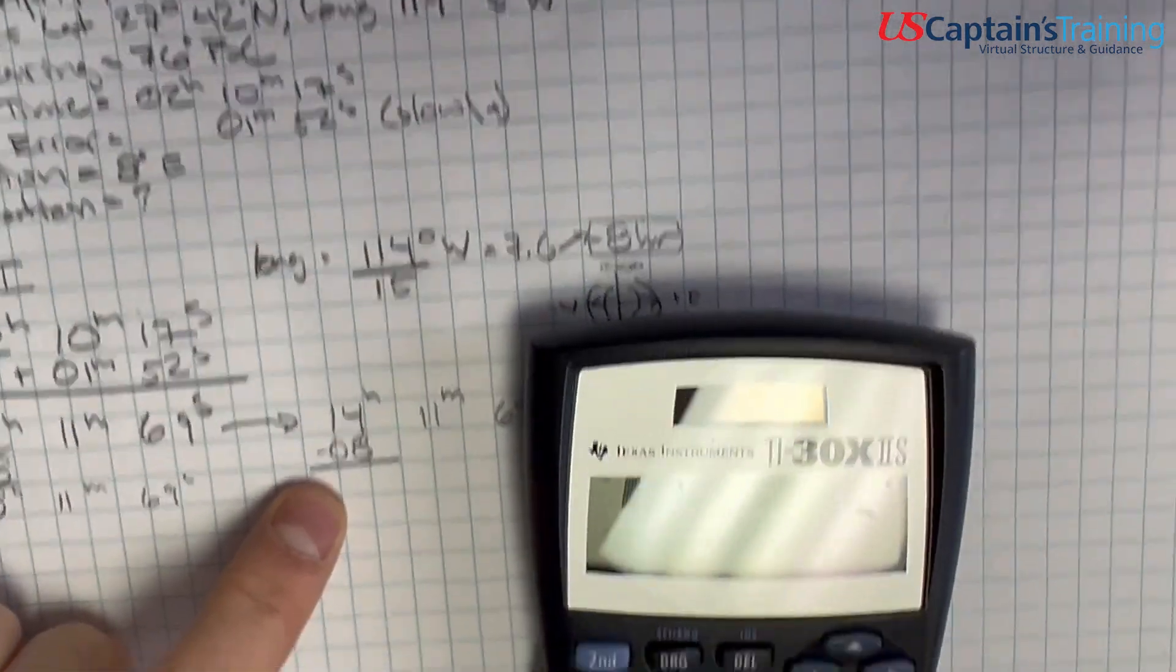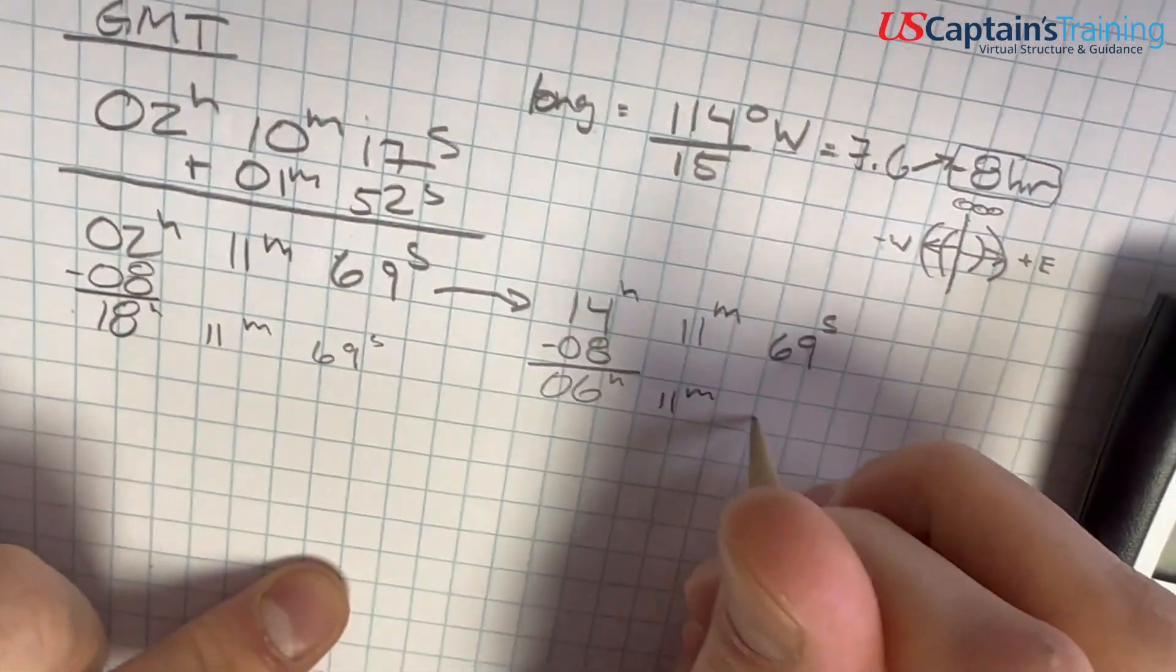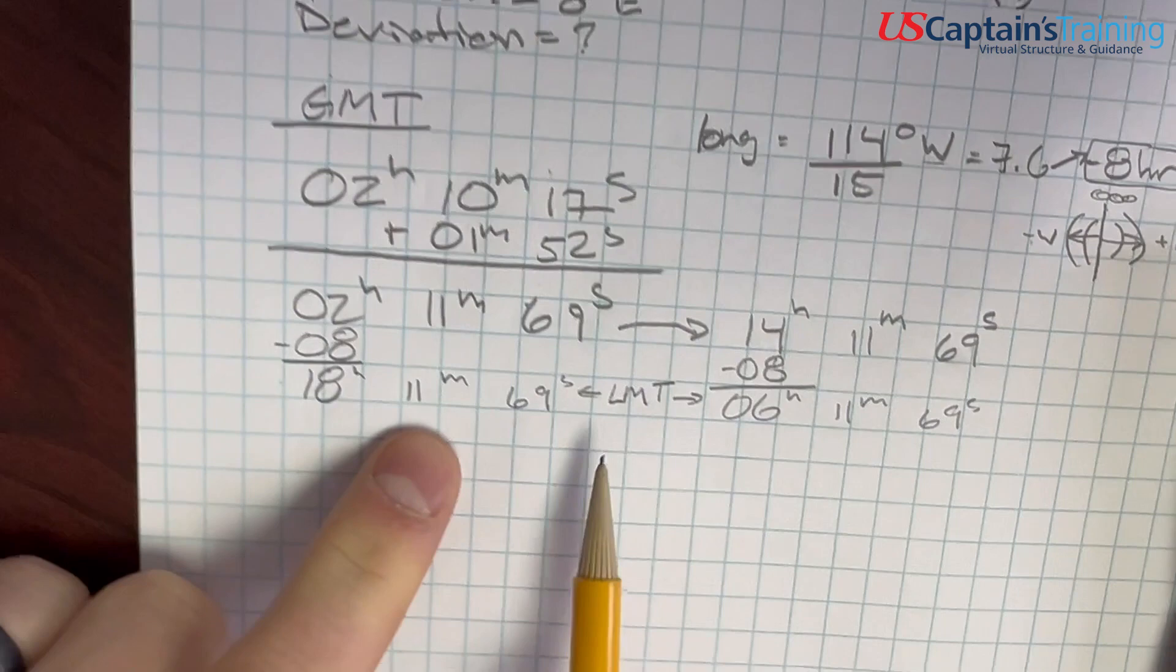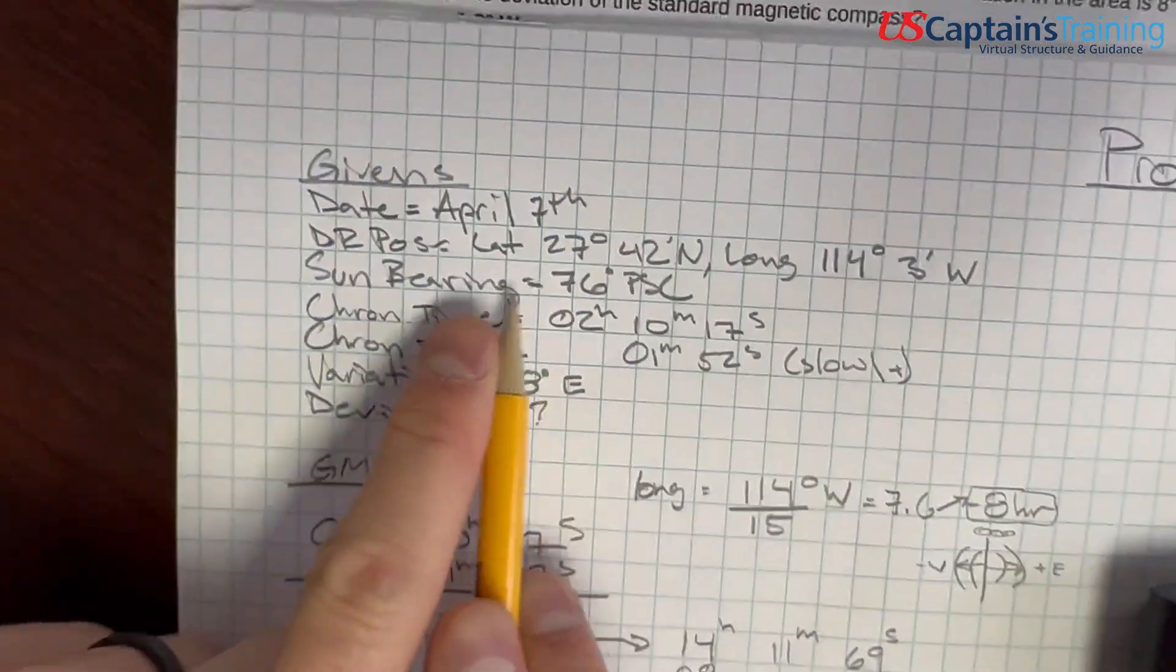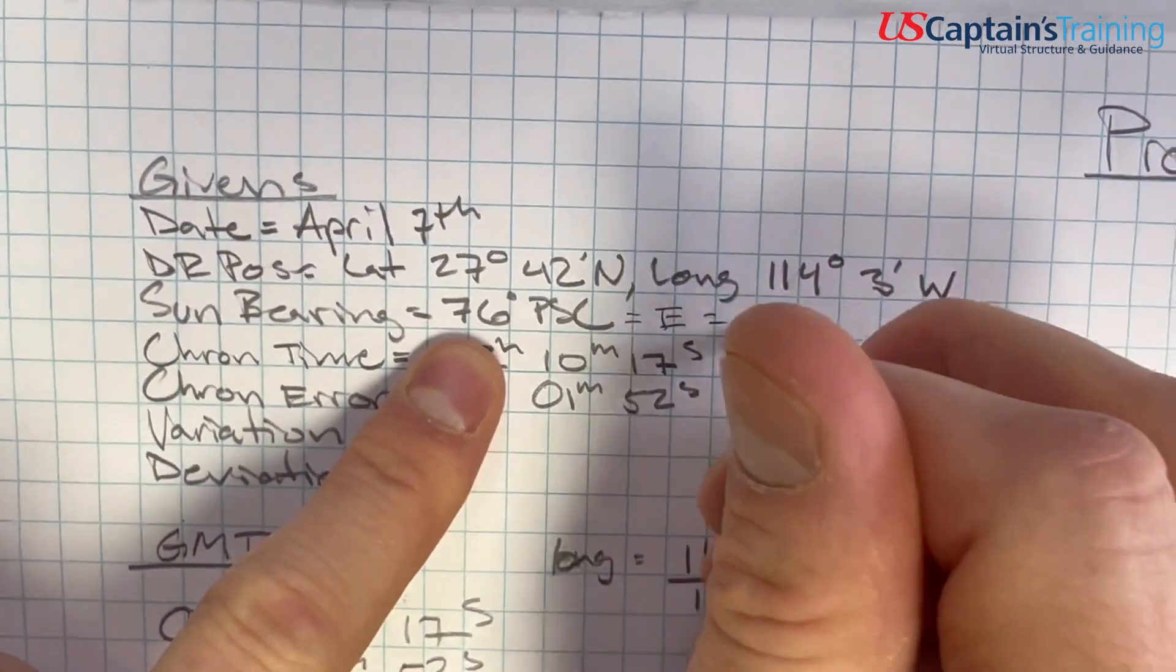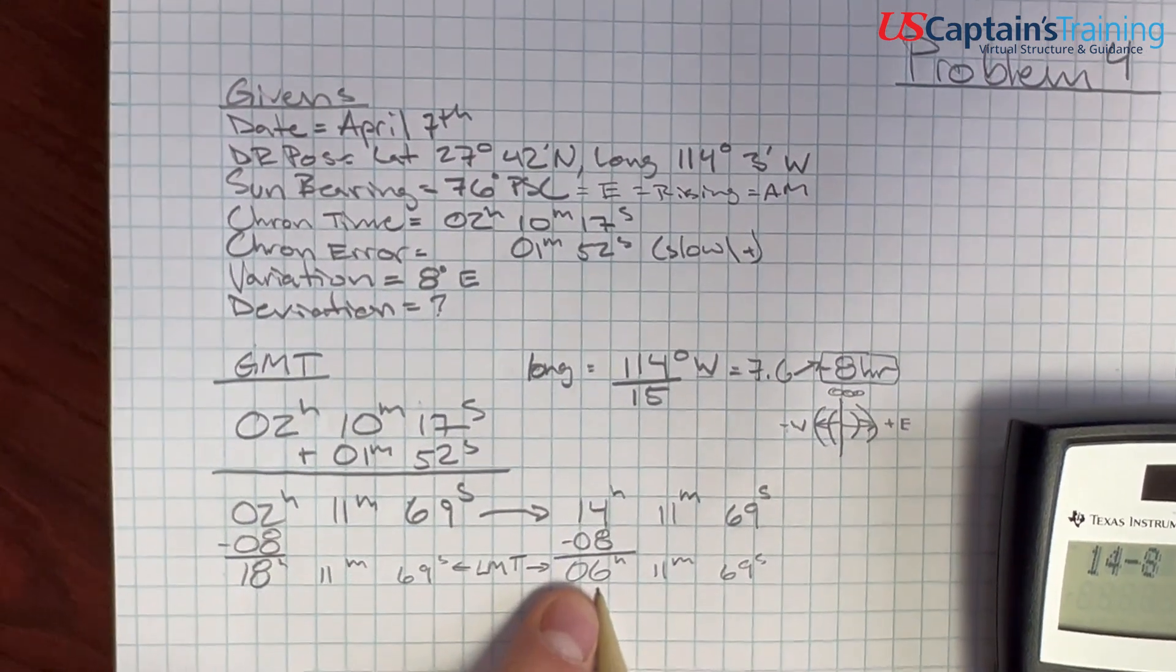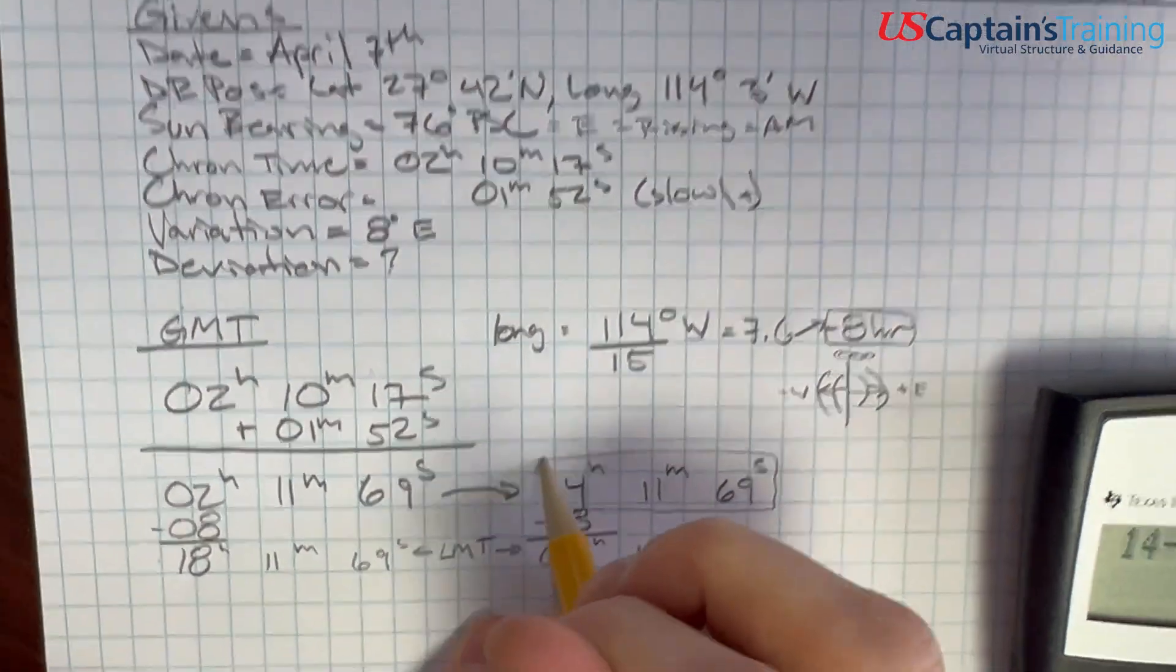If we are at Greenwich Mean Time, the prime meridian, we go to the east, we add. If we go to the west, we are subtracting. In this case we're west, so we are subtracting. So we're going to subtract that 8 hours. When we subtract 8 hours, this will give us our local mean time. So 2 minus 8, we can't do that, but if we add 24 hours to this, we get 18 hours 11 minutes 69 seconds. 14 minus 8 is going to give us 6 hours 11 minutes 69 seconds.